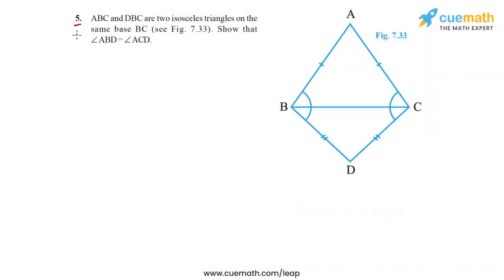Question 5 of this exercise is a fairly simple question. It says that ABC and DBC are two isosceles triangles on the same base BC. So we have this base BC on which two isosceles triangles ABC on the top side and DBC on the bottom side are drawn, and we have to show that angle ABD is equal to angle ACD.